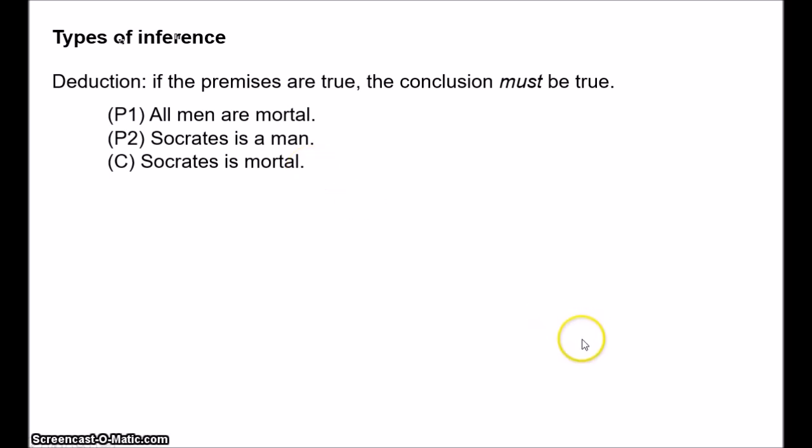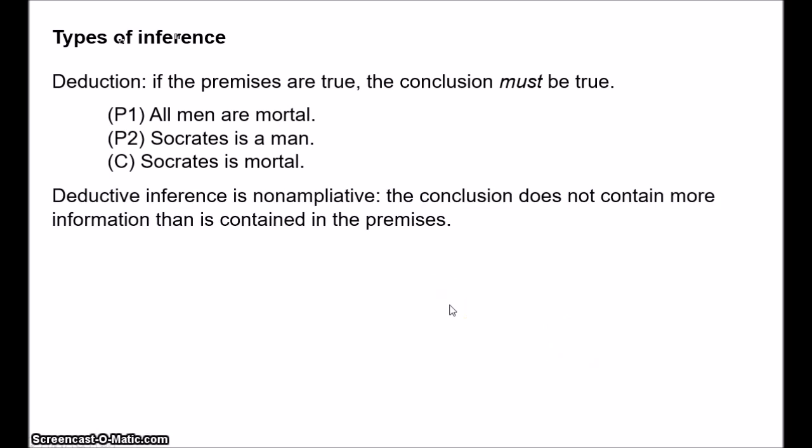Now, the important thing to notice about deduction is that it is non-ampliative. This means that the conclusion does not contain any more information than was in the premises. The conclusion just makes salient some of the information that you already asserted when you asserted the premises. And, I mean, that's why the truth of the premises guarantees the truth of the conclusion, right? Because in asserting the conclusion, you're just basically reasserting something that you already said when you said the premises. So, you know, if the premises are true, the conclusion has to be true as well.